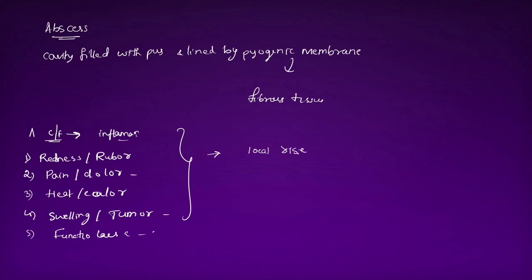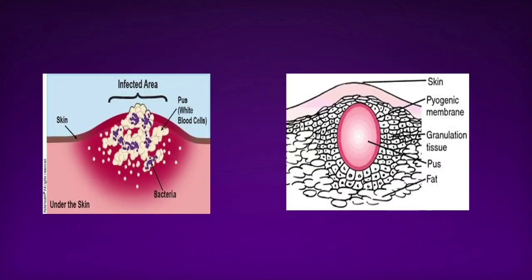On examination there will be local rise of temperature, tenderness — meaning pain on touch — and all these features of inflammation will be present. The abscess is a cavity filled with pus lined by pyogenic membrane. The pus contains WBCs and bacteria, both dead and alive, in the infected area which will be red and edematous.